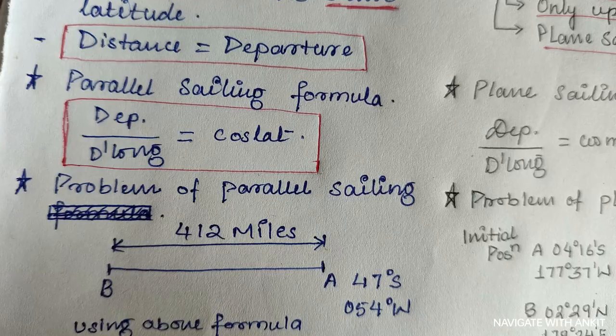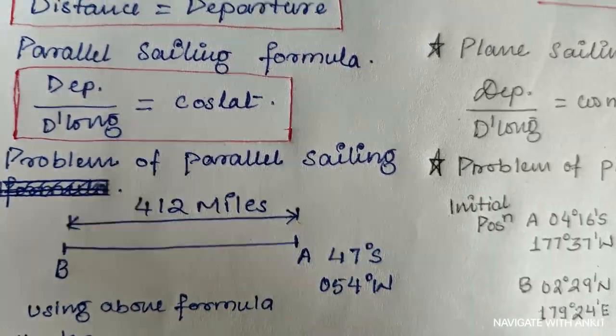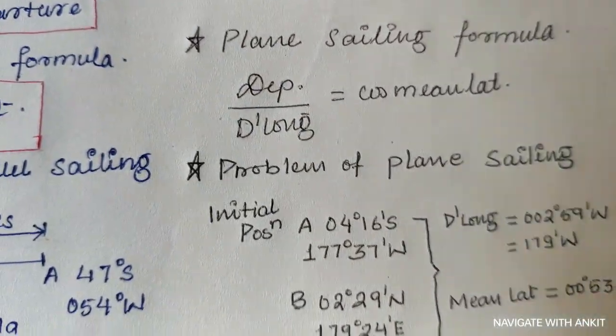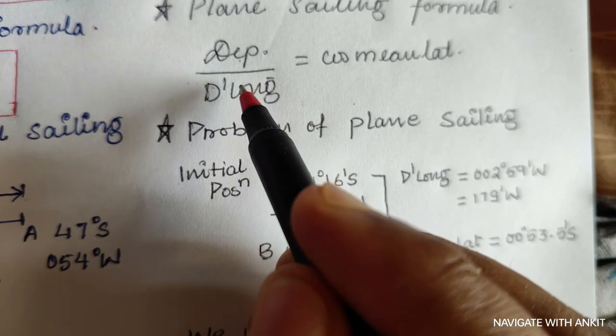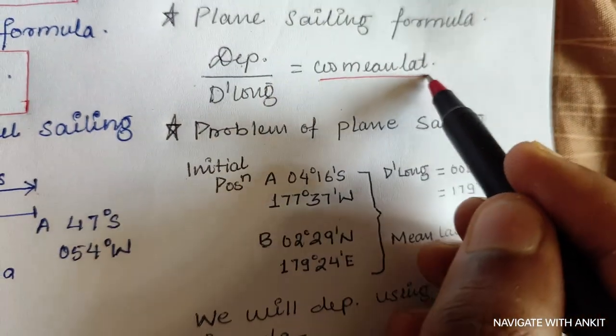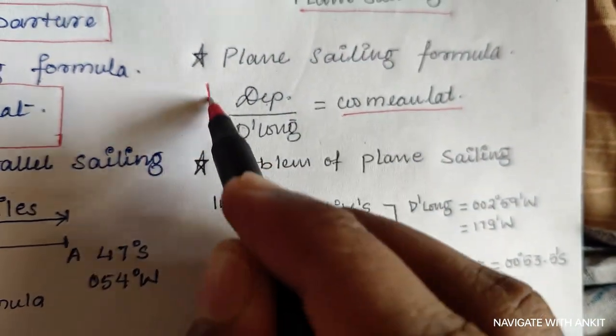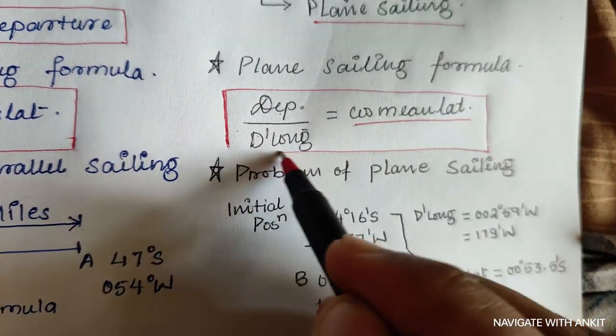The derivation of this formula can be discussed in another video. While in plane sailing we use departure upon D'long equals cosine of mean latitude to find the departure of the track, or you can say departure between the two positions.